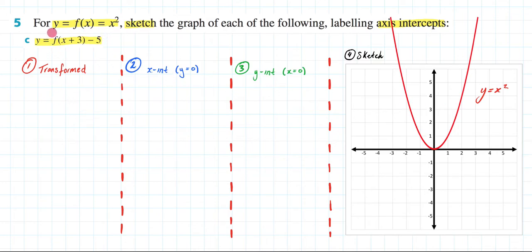So they have told us that y equals f of x equals x squared, so let me write that in. Y equals f of x equals x squared. So now let me consider this: they've told me that y equals f of x plus 3 minus 5.